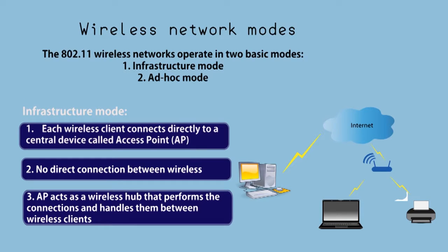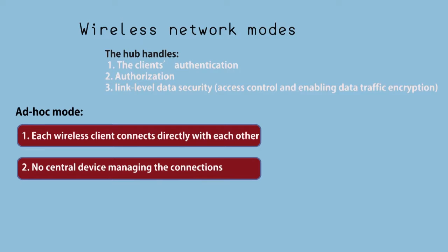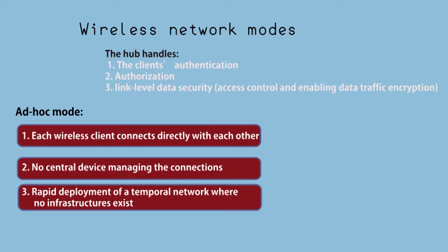In infrastructure mode, each wireless client connects directly to a central device called an access point. There is no direct connection between wireless clients. The AP acts as a wireless hub that handles connections between wireless clients, including the clients' authentication, authorization, and link-level data security.